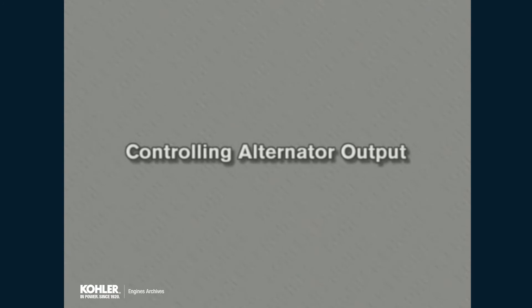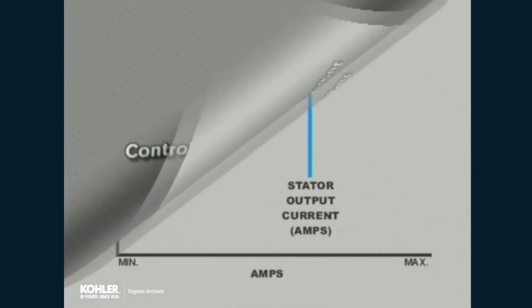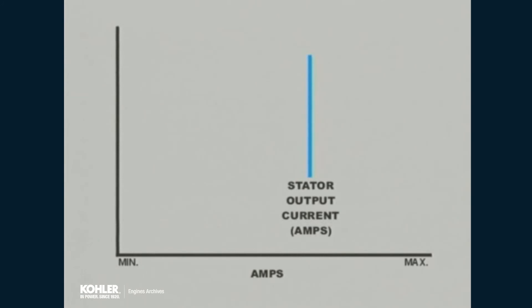Alternator stator output must be controlled in some fashion to provide adequate charging while preventing overcharging and battery damage. In some cases, this is accomplished by matching the construction and output of the charging stator to the total requirement of all the electrical loads on the equipment. When no other accessories are used, this method of charging circuit control is quite simple and reliable.